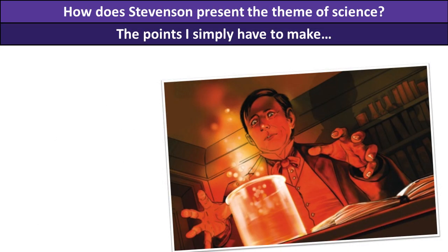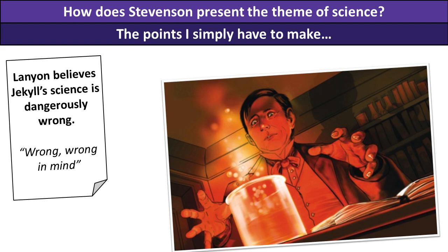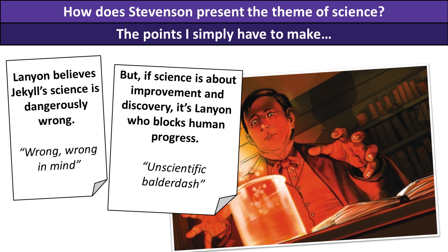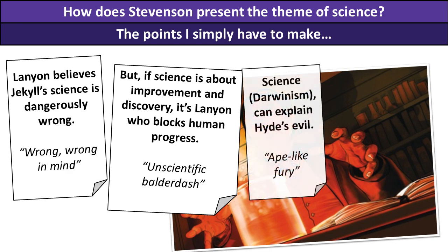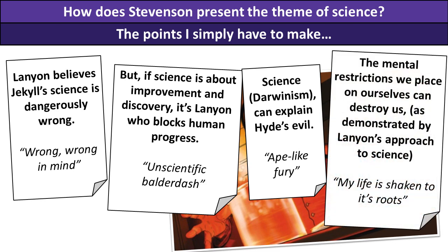So there are the four points I simply have to make about science. First, Lanyon believes Jekyll's science is dangerously wrong — I've got the quote 'wrong, wrong in mind' in mind. But if science is about improvement and discovery, it's Lanyon who is blocking that human progress, and I've got 'unscientific balderdash' for that. I'm then going to look at Darwinism, a key scientific discovery, and how it can explain Hyde's evil, showing how science can solve the mysteries of our life. But the mental restrictions we place in ourselves can destroy us, as demonstrated by Lanyon's approach — showing science as a metaphor for the mental restrictions society places on us.